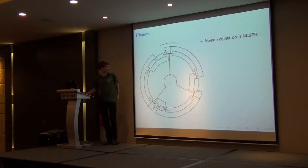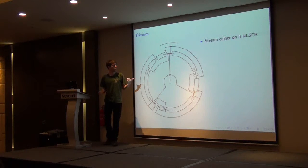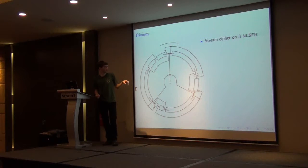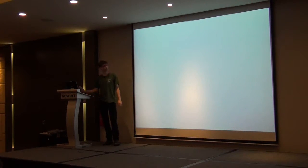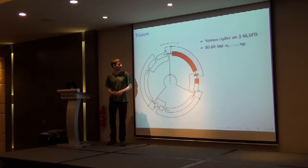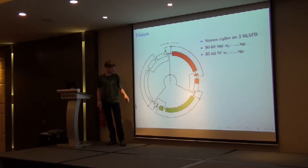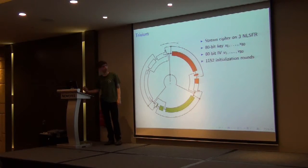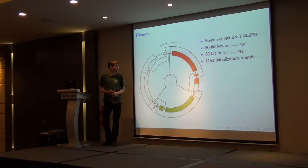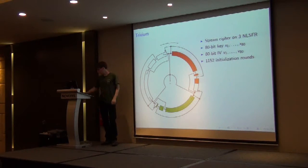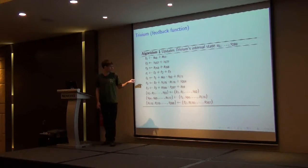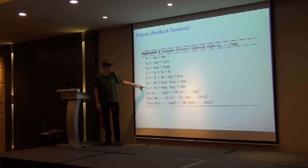First, introduction. This is Trivium, which you may probably know — it's a stream cipher from the eSTREAM competition, and it has three non-linear feedback shift registers. In the first register we put the 80-bit key, in the second register we put the initialization vector, which is also 80-bit. We have 1,152 initialization rounds, which just means that we will do four complete turns of the cipher.